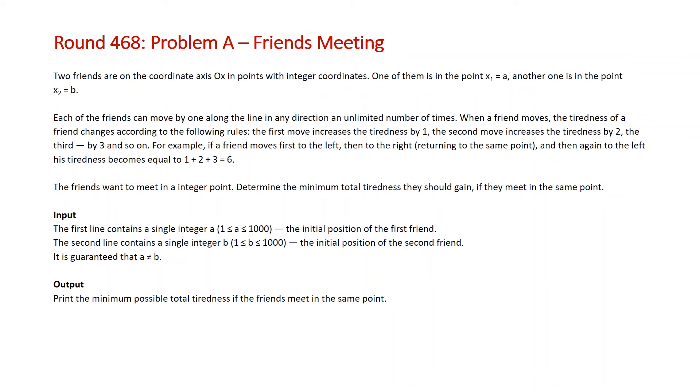The problem states two friends are on the coordinate axis 0x in points with integer coordinates. One of them is in point x1 equal to A and another is in the point x2 equal to B.